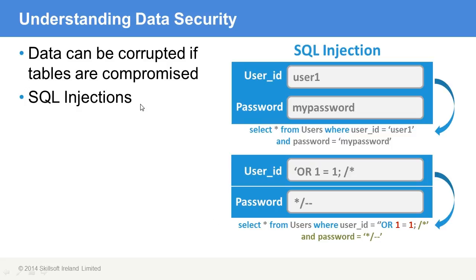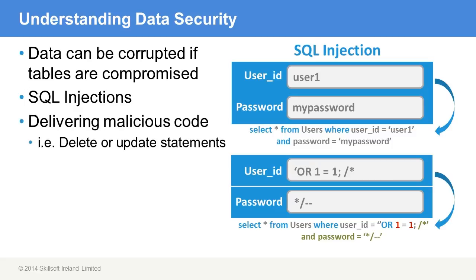SQL injection is fairly well known and most developers and security experts are fully aware of it — that one-equals-one trick has been around for quite some time. But it also opens you up to having malicious code delivered into the statement, such as a DELETE or an UPDATE statement. So instead of selecting, you end up processing a DELETE statement to remove records, or an UPDATE statement to change values. This is how people skilled at attacking databases can gain access by simply inserting incorrect values or updating to values that should not be changed.